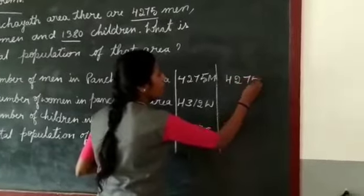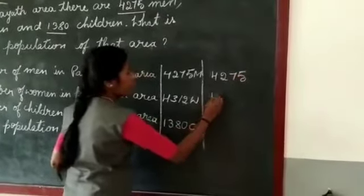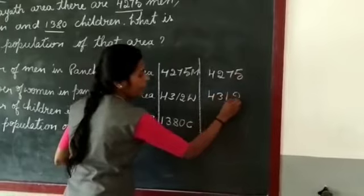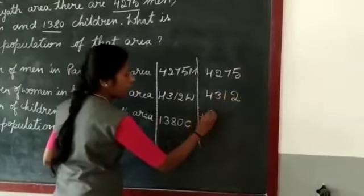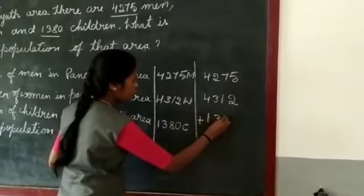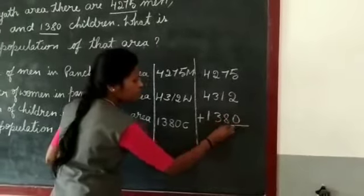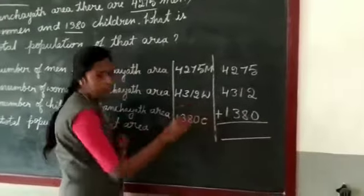4,275, 4,312 plus 1,380. Now, add the numbers.